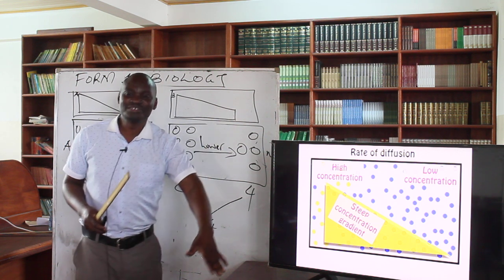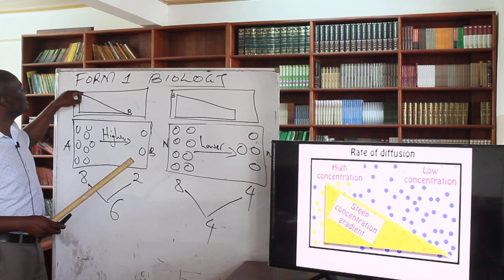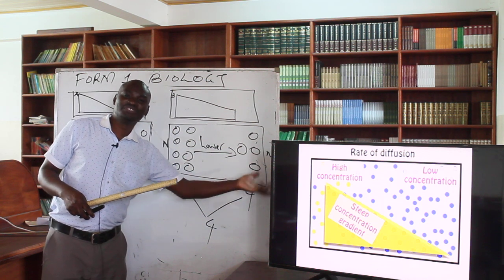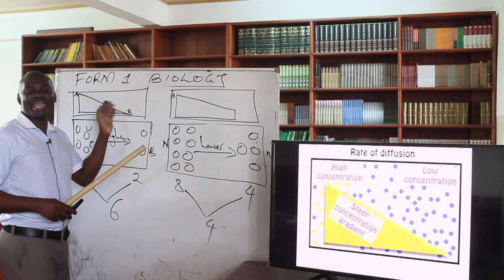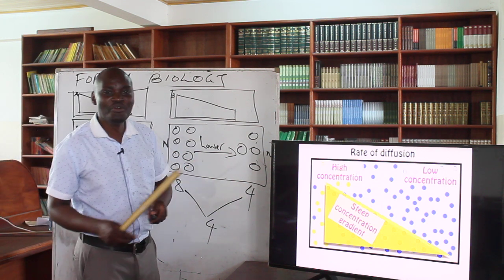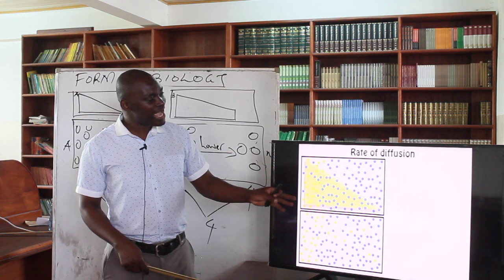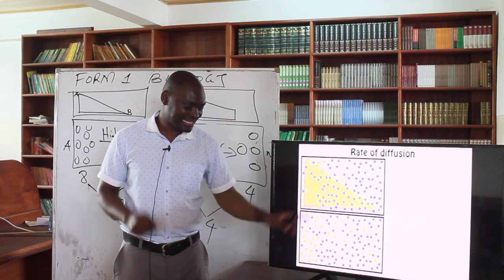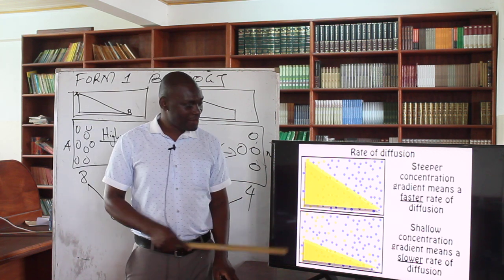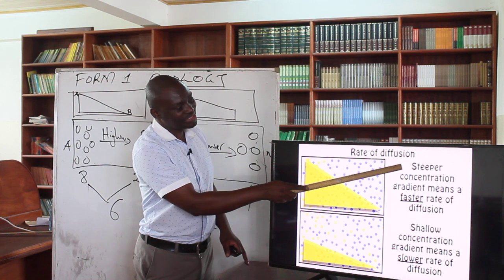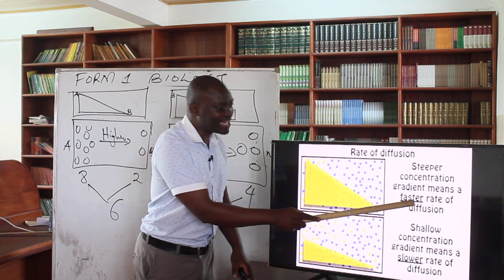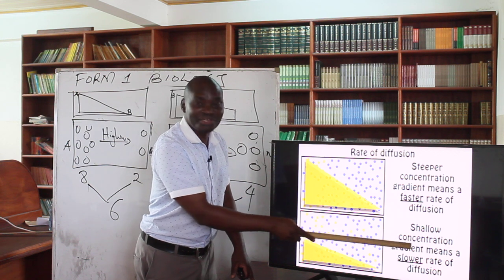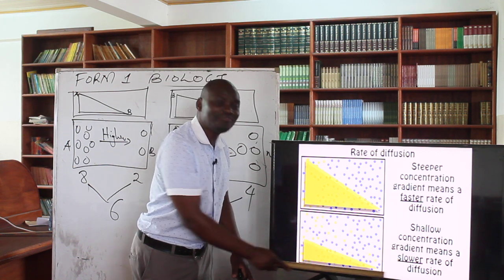If you pour water on a steep slope, it will move very fast. If you pour water on a gentle slope, it will move slowly. Molecules move faster where the difference in concentration is large and slowly where the difference is small. The rate of diffusion will be higher where we have a steep concentration gradient and lower where we have a less steep gradient. So a steeper concentration gradient means a faster rate of diffusion, and a shallow concentration gradient means a lower rate of diffusion.